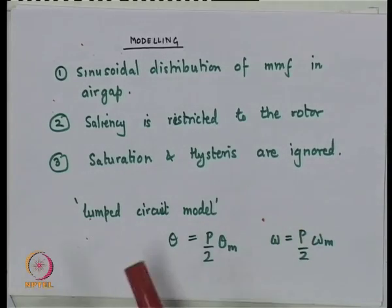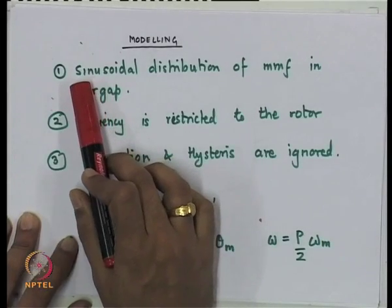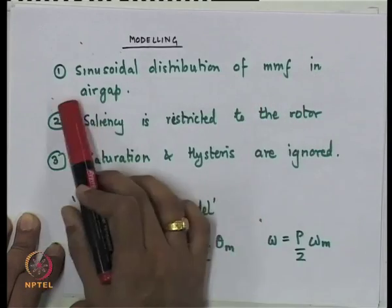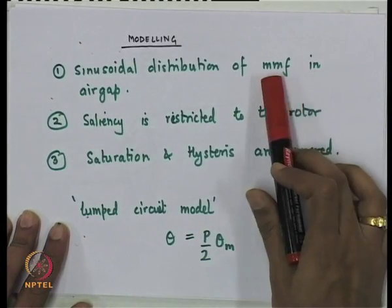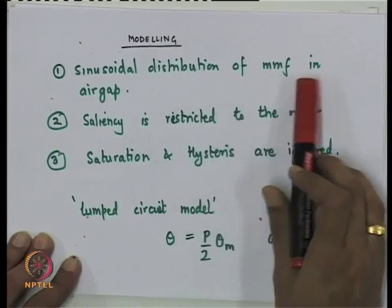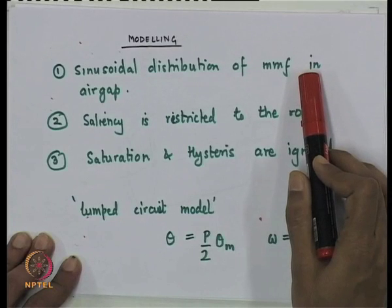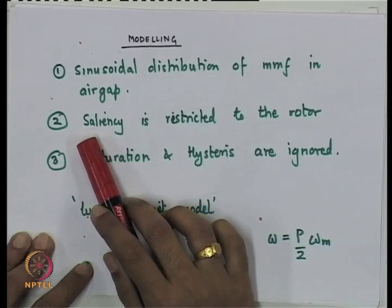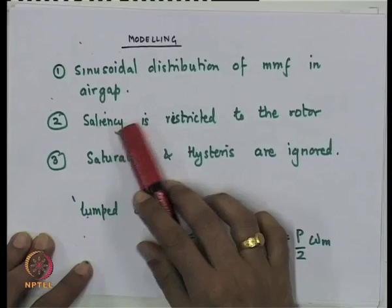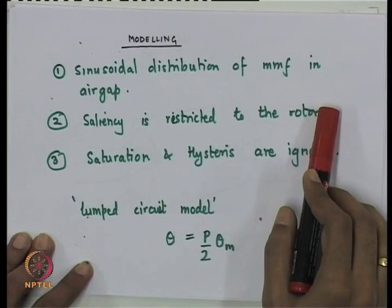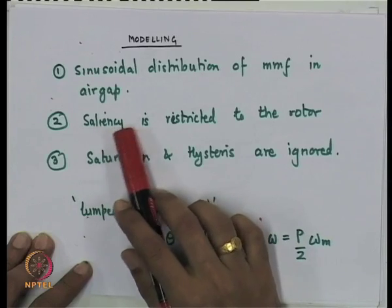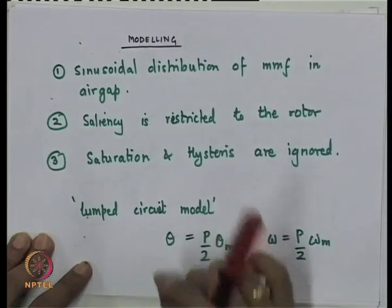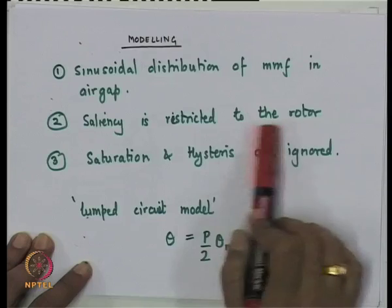One important assumption is that there is a sinusoidal distribution of MMF in the air gap — this is actually nearly true because of the winding arrangements used. Another assumption is that saliency is restricted to the rotor; we will not consider saliency due to stator slots. Only the saliency due to rotor structure will be considered.